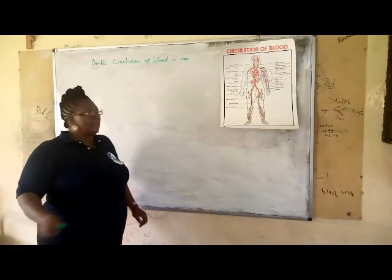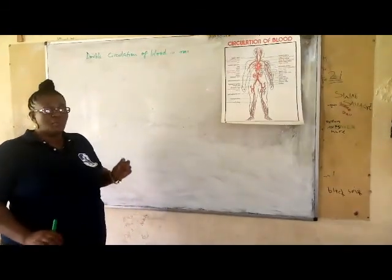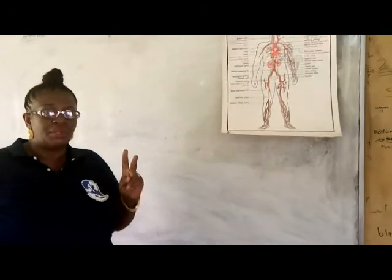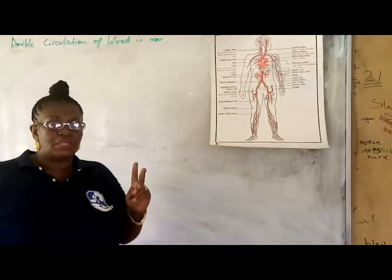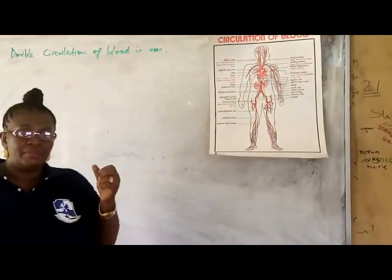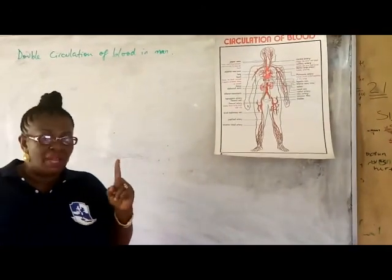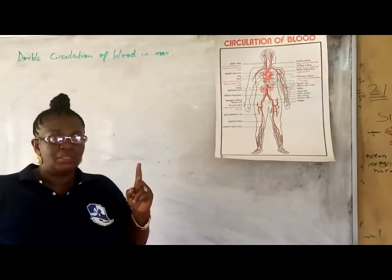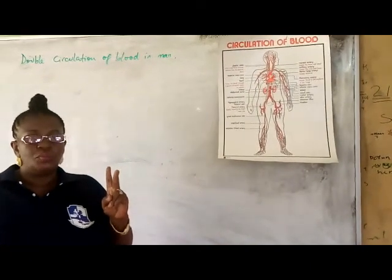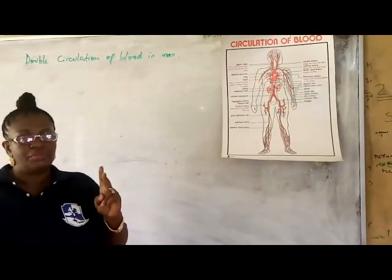Double circulation in man. We say there is a double circulation in man because we have, one, the pulmonary circulation, and two, the systemic circulation.